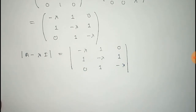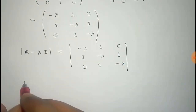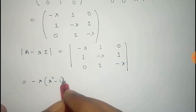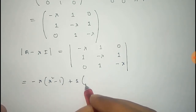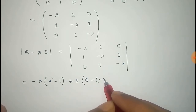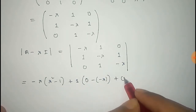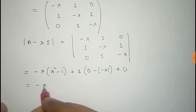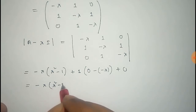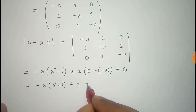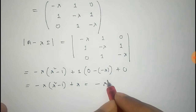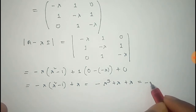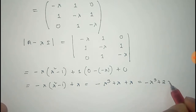Thus we get the matrix A minus lambda I. Now, for the characteristic equation, we have to find the determinant of A minus lambda I. We expand it by the first row, so that is: minus lambda times (lambda squared minus 1), plus 1 times (0 minus minus lambda), plus 0. That equals to minus lambda times (lambda squared minus 1) plus lambda, which gives minus lambda cubed plus 2 lambda.